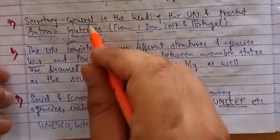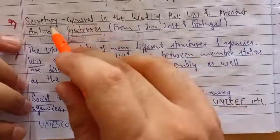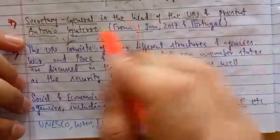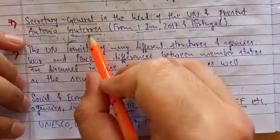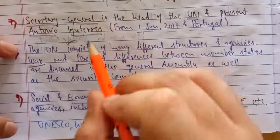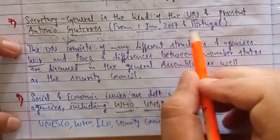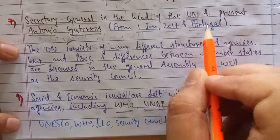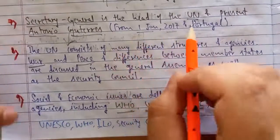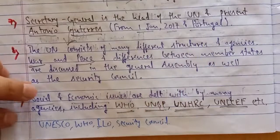Like we have a Prime Minister or President, the head of the United Nations is called the Secretary General. Presently, António Guterres is the Secretary General and head of the UN. He is from Portugal and was also the Prime Minister of Portugal. This can be asked as a one-mark question, so please remember.